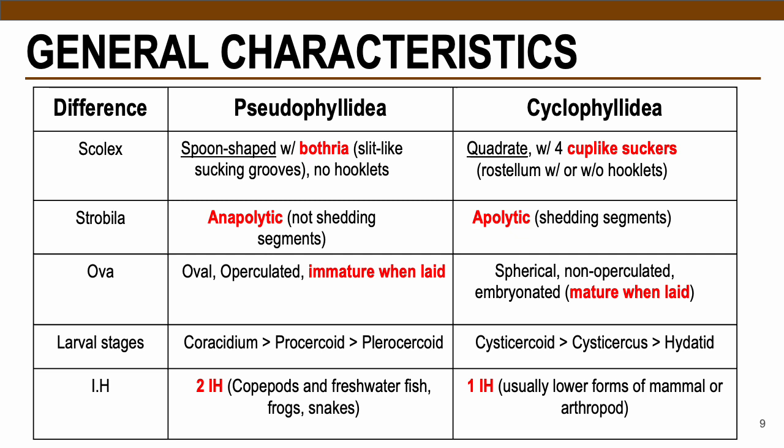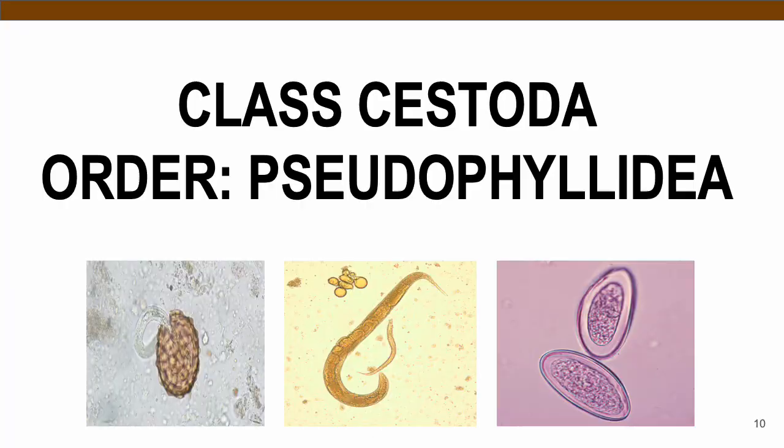Here is the difference between the two orders of Cestodes — Pseudophyllidea and Cyclophyllidea. For Pseudophyllideans like D. latum, eggs are immature when laid and most are operculated. Cyclophyllidean eggs are non-operculated and are matured when laid by the worm. Also note that Pseudophyllideans require at least two intermediate hosts, while Cyclophyllideans require one intermediate host.